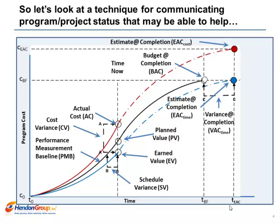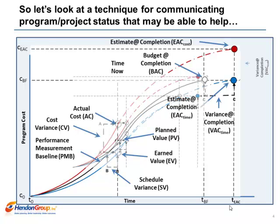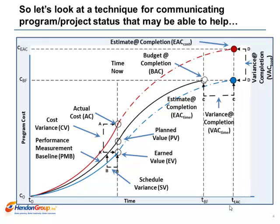Again, remember budget at completion for cost will change throughout the change control process, so remember to keep budget at completion updated with approved changes and scope additions or subtractions. The variance at completion for cost is simply the difference in cost between the budget at completion for cost and the estimate at completion for cost.